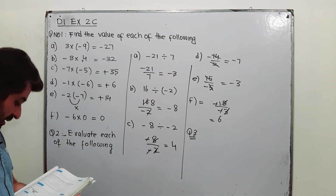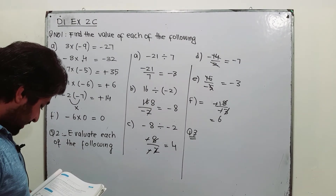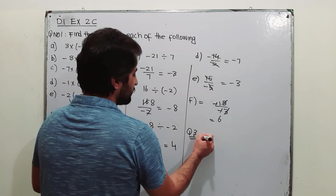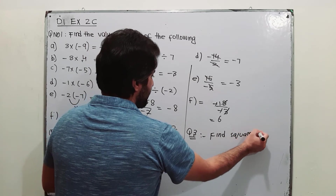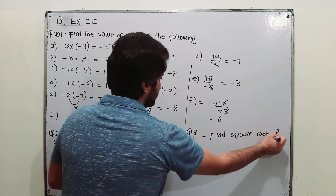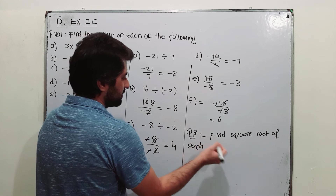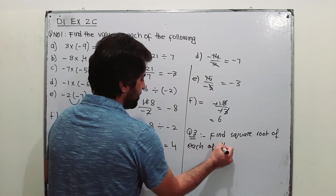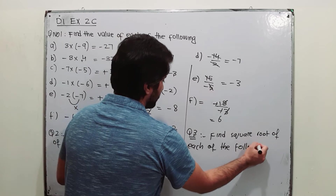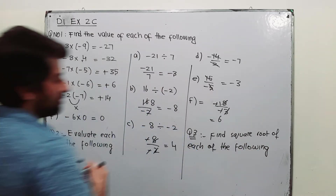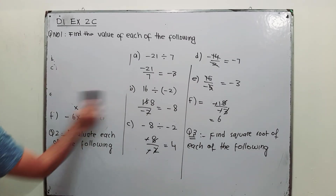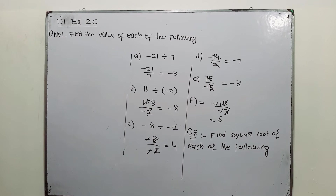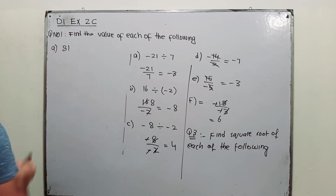Question number 3 from Exercise 2C of D1: find the square root of each of the following. Starting from part a, we need to find the square root of 81.